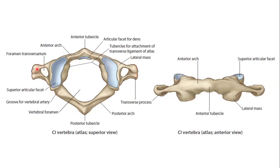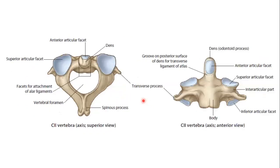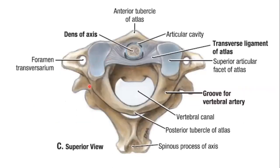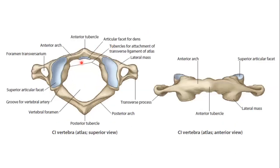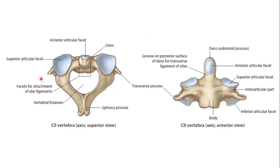The transverse process of C1 is quite elongated. Above, C1 forms the atlanto-occipital joint with the occipital bone, and below it forms the atlanto-axial joint with C2, the axis. The axis is recognized by this tooth-like projection — the dens — going upwards, fitting into the atlas and making the atlanto-axial joint.